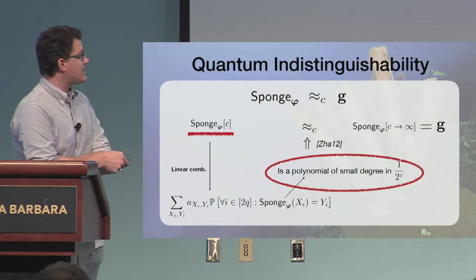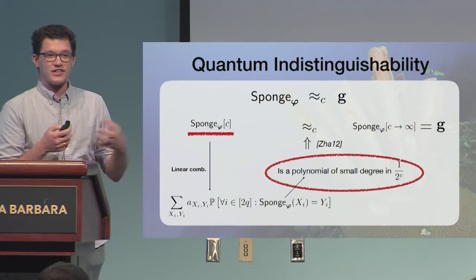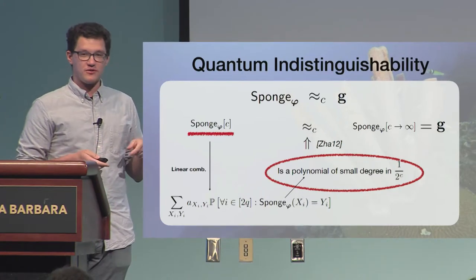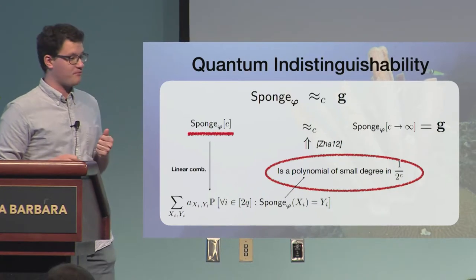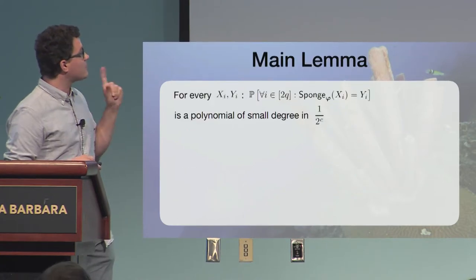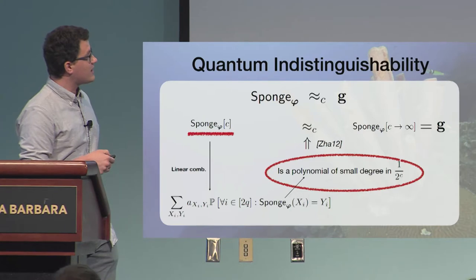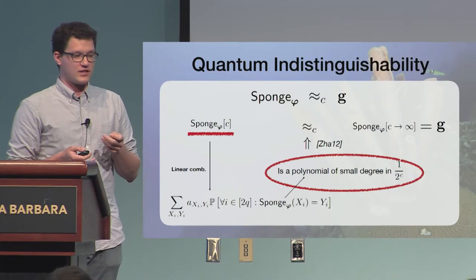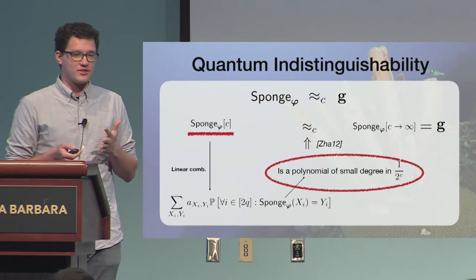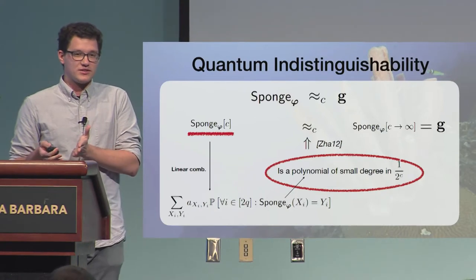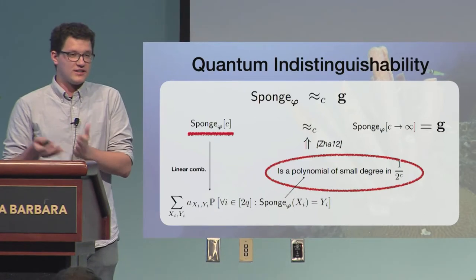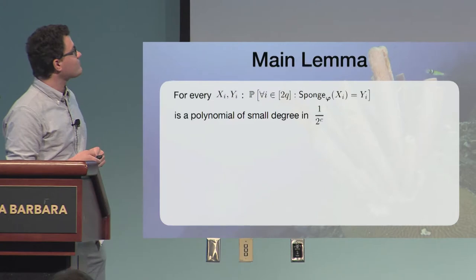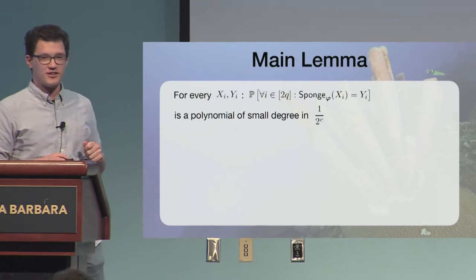But we will use this, so this is the same statement, in the following way. So we're gonna focus on this part and say that this is a polynomial of small degree in 1 over 2 to the capacity. Why do we do that? That's because if this is the case, so this part, this probability of 2Q input output super is a polynomial of small degree, then the whole thing is also a polynomial of small degree. And this gives us the indistinguishability statement that we aimed at. And this part is the hard part. Because we need to analyze these probabilities. And you have already seen the picture, but the construction is not straightforward. So to find this polynomial was the hard part.